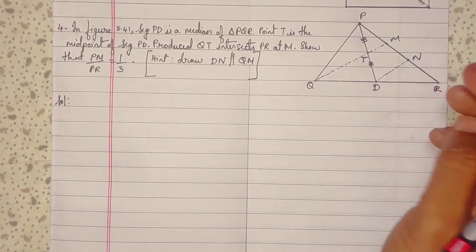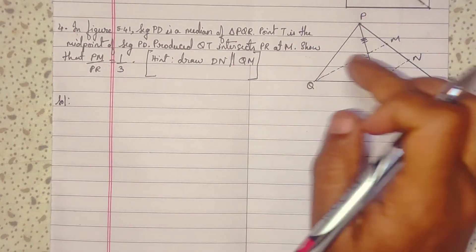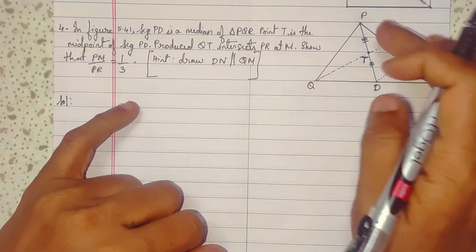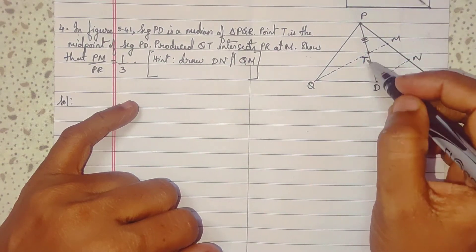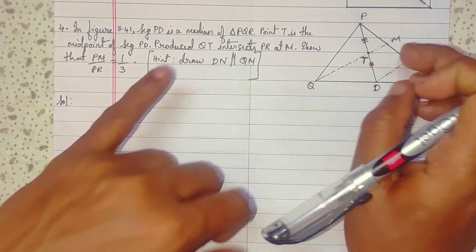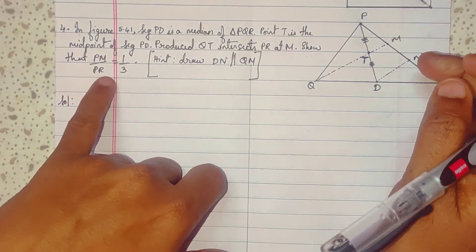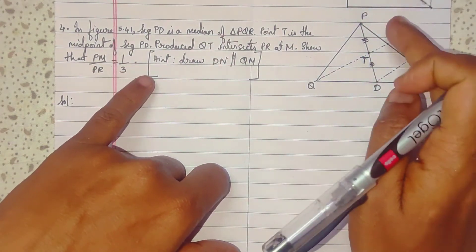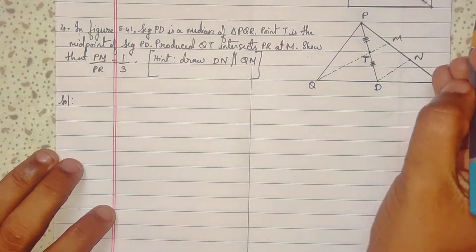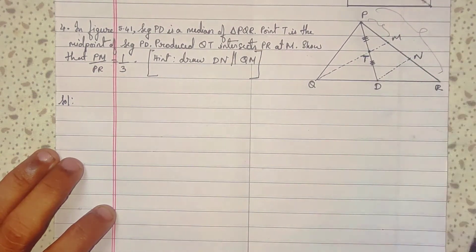Fourth question. Seg PD is a median of triangle PQR, so D is the midpoint of QR. Point T is the midpoint of seg PD, meaning PT equals TD. A line is drawn through T meeting PR extended at M. We need to prove that PM upon PR equals one third.